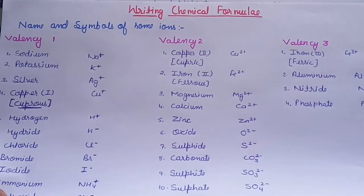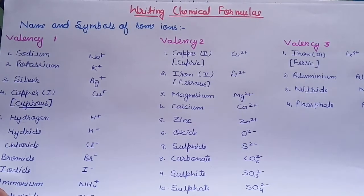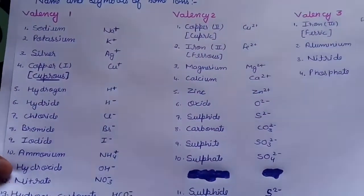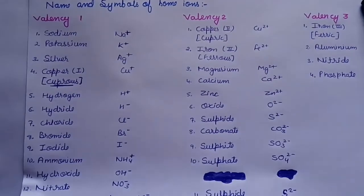To write chemical formulas, you need two things. First, you must know the symbol of various ions and secondly, their valency. So here you can see the symbols and valencies of various ionic ions.